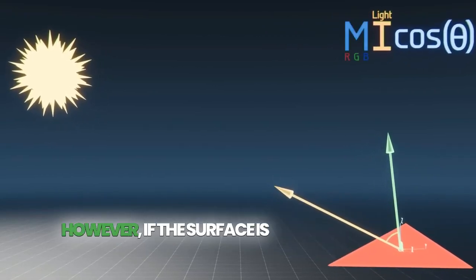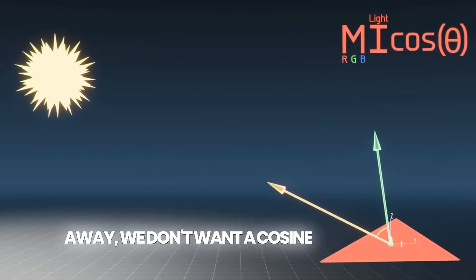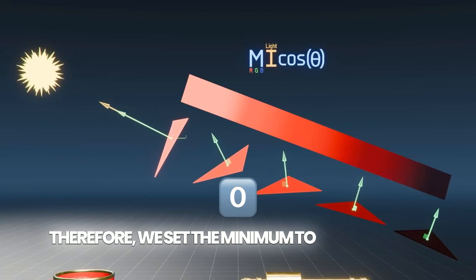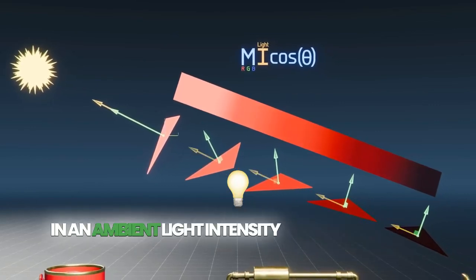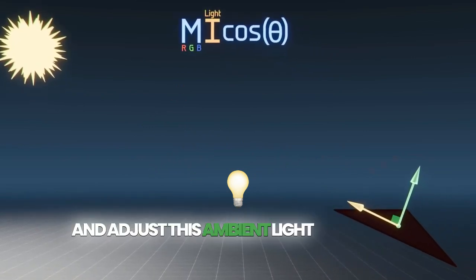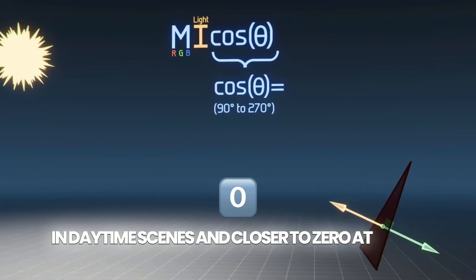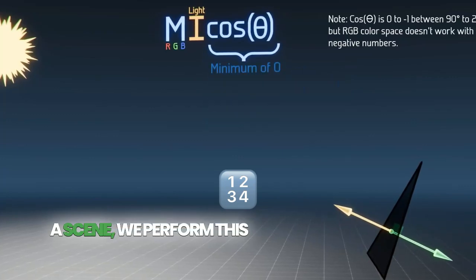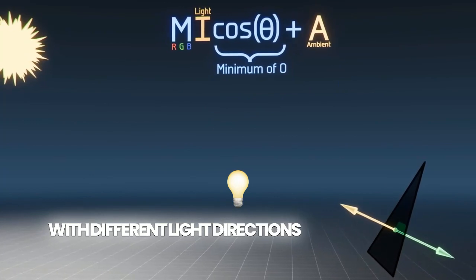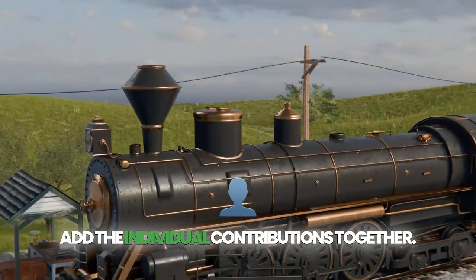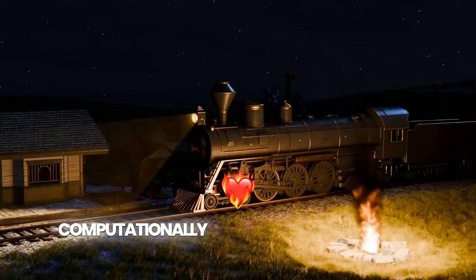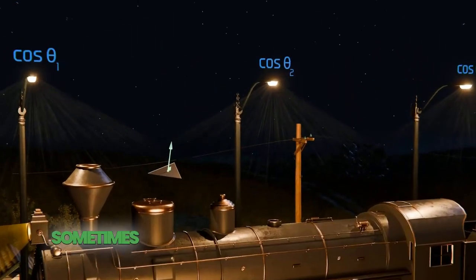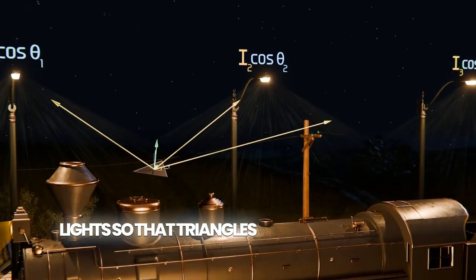However, if the surface is perpendicular or facing away, we don't want a cosine theta value of zero or a negative number, because this would result in a pitch black surface. Therefore, we set the minimum to zero and add in an ambient light intensity times the surface color, adjusting this ambient light so that it's higher in daytime scenes and closer to zero at night. Finally, when there are multiple light sources in a scene, we perform this calculation multiple times with different light directions and intensities, and then add the individual contributions together. Having more than a few light sources is computationally intense for your GPU, and thus scenes limit the number of individual light sources and sometimes limit the range of influence for the lights, so that triangles will ignore distant lights.